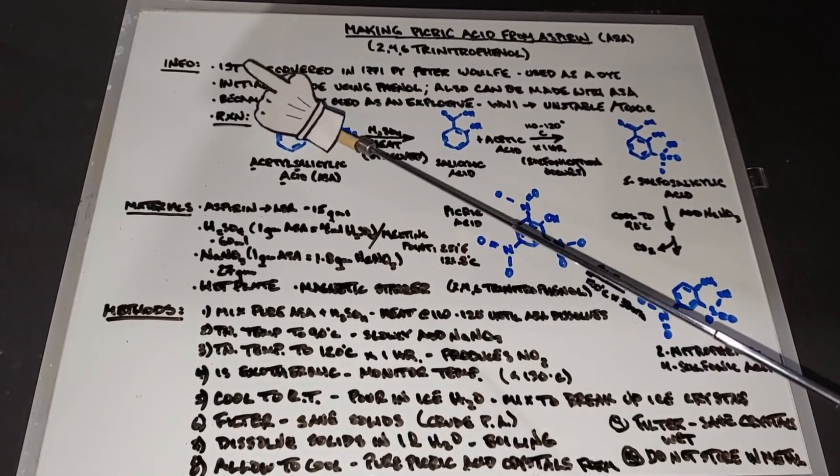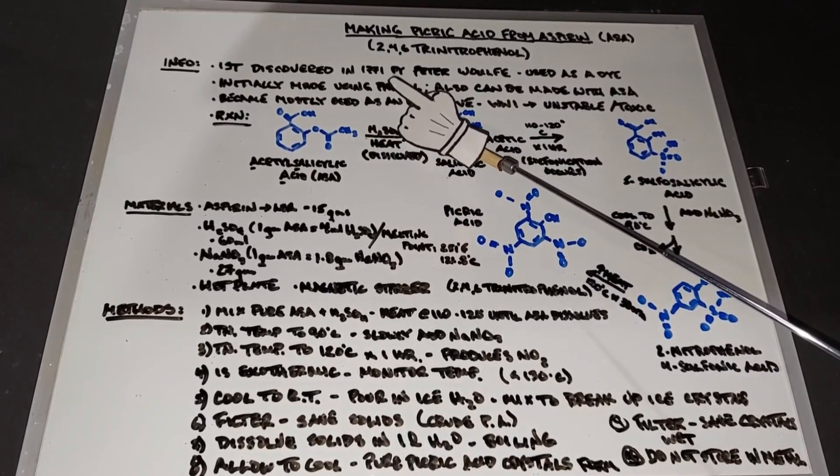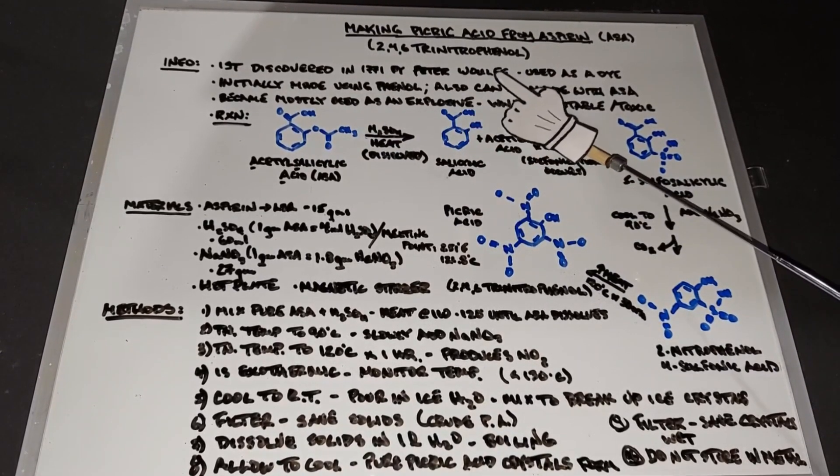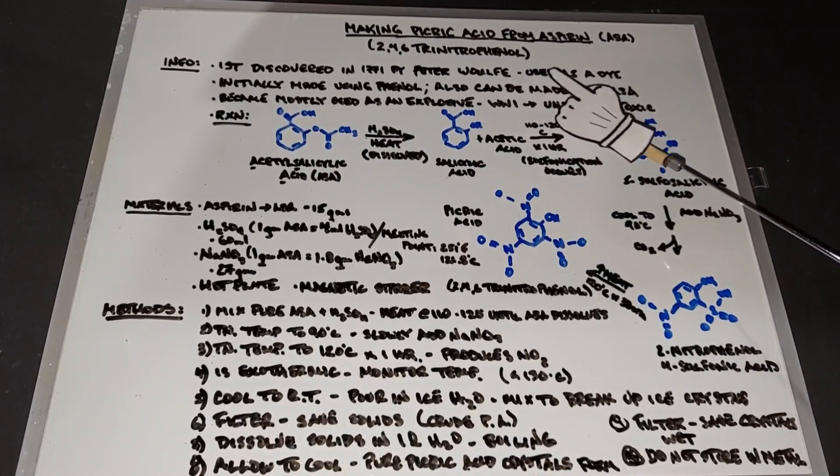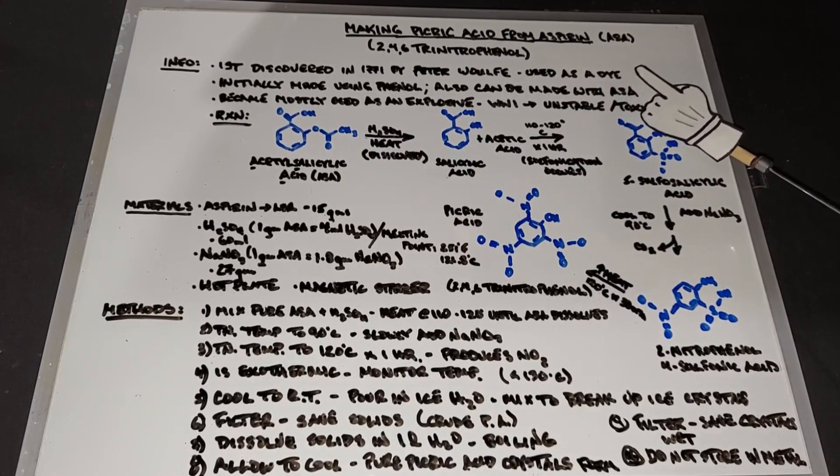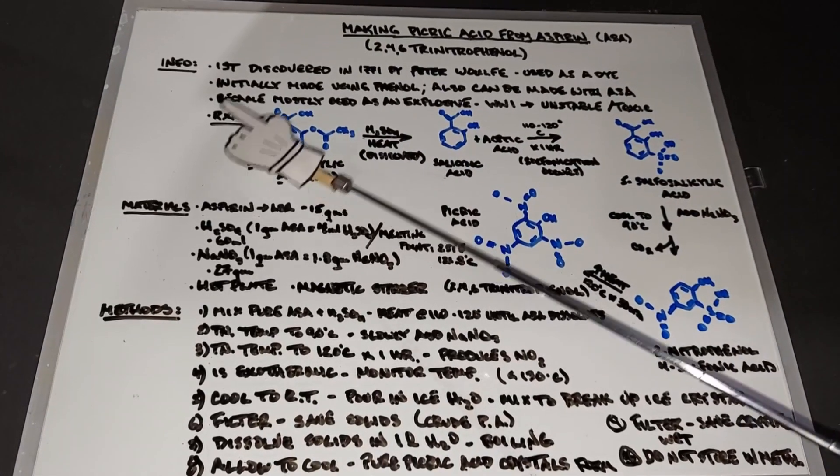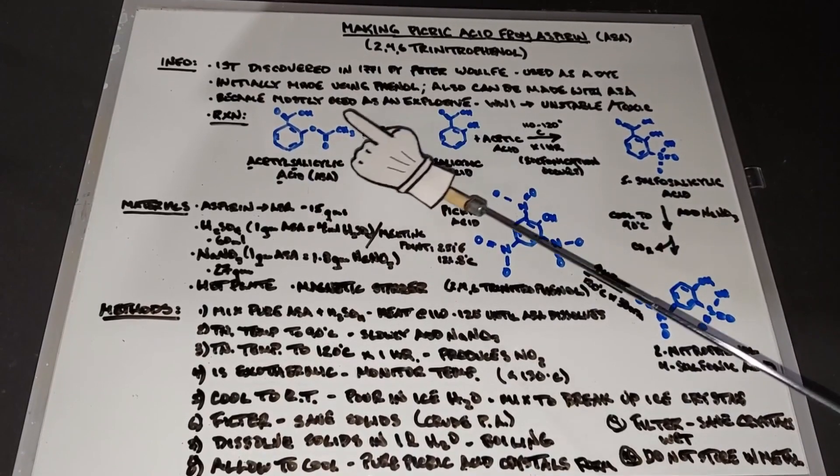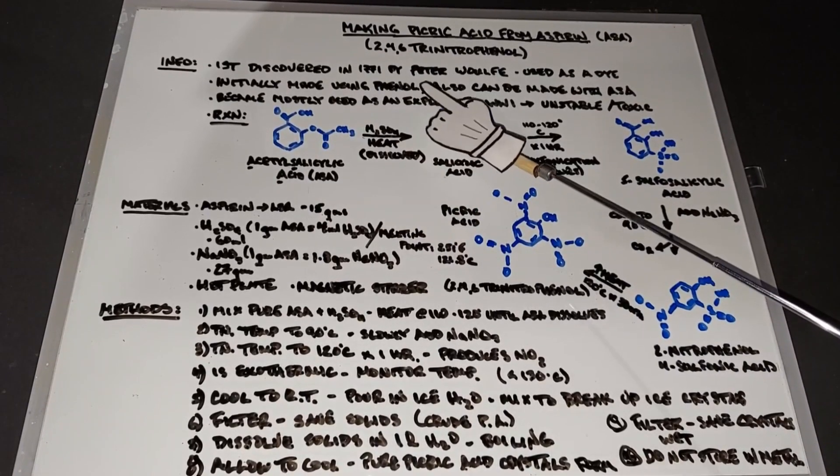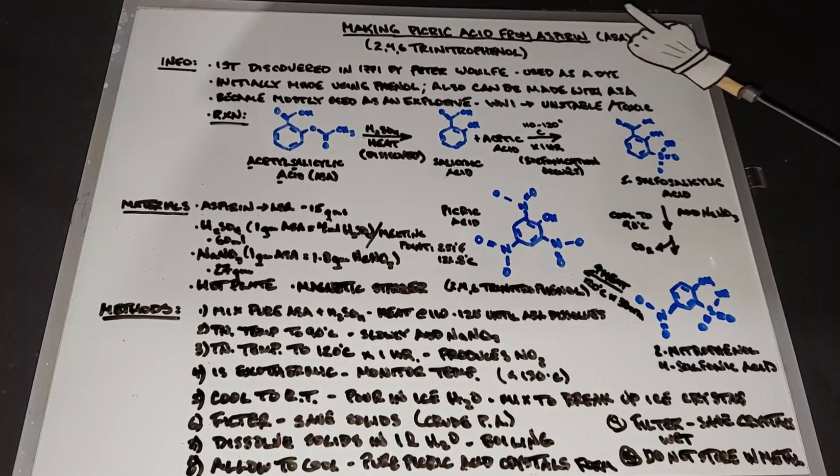Some information about picric acid. It was first discovered in 1771 by Peter Wolff, a British scientist who used it as a dye initially, as it dyes everything. It was initially made using phenol, as this benzene ring is part of phenol, and you're already halfway there compared to using aspirin.